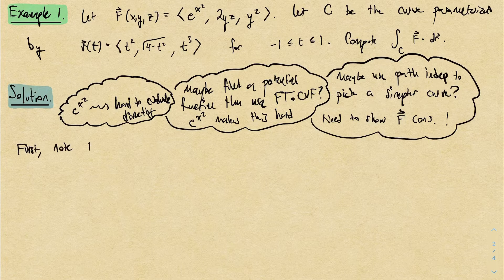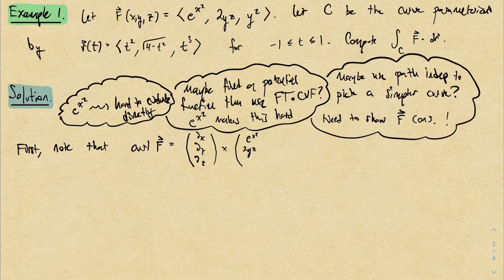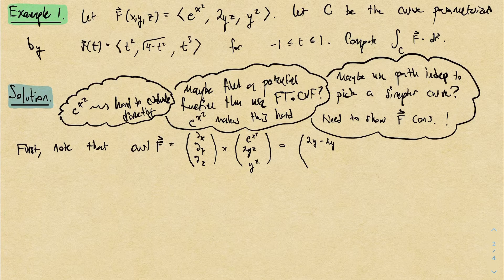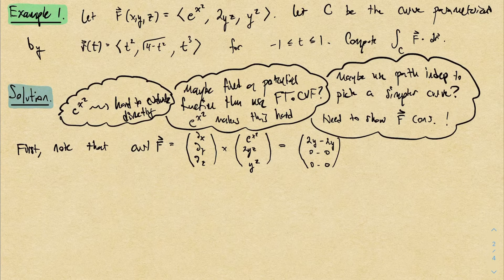The curl is the cross product of the del vector with the vector field. The first component is the y-derivative of y² minus the z-derivative of 2yz: that's 2y − 2y = 0. The next component is the z-derivative of e^(x²) minus the x-derivative of y²: both are 0. The last component is the x-derivative of 2yz minus the y-derivative of e^(x²): both are 0 again. So the curl is the zero vector.